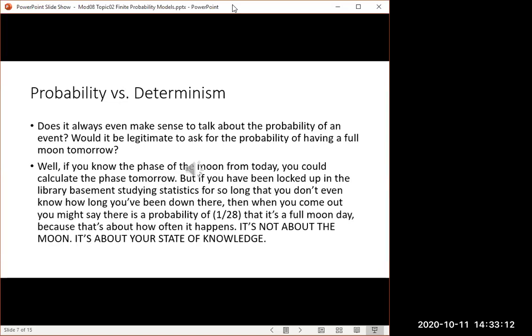Now, does it always even make sense to talk about probability? Would it be legitimate to ask for the probability of having a full moon tomorrow? Well, if you know the phase of the moon from today, you could just calculate what it's going to be tomorrow. There's no probability involved. But if you've been locked up in the library basement for a long time, you don't even know how long you've been down there, then you might say 1/28, because it's about how long it takes the moon to go around. So it's not a question about the moon. It's about your state of knowledge.